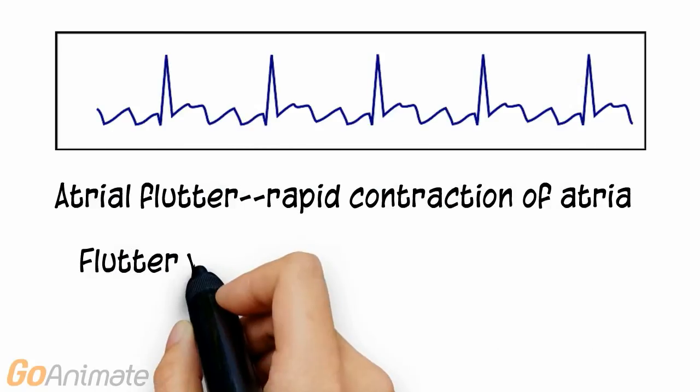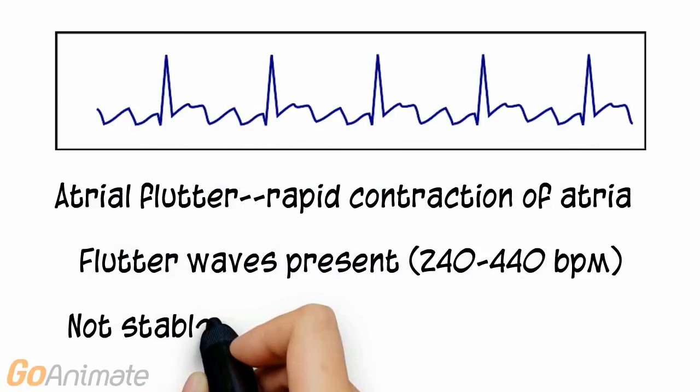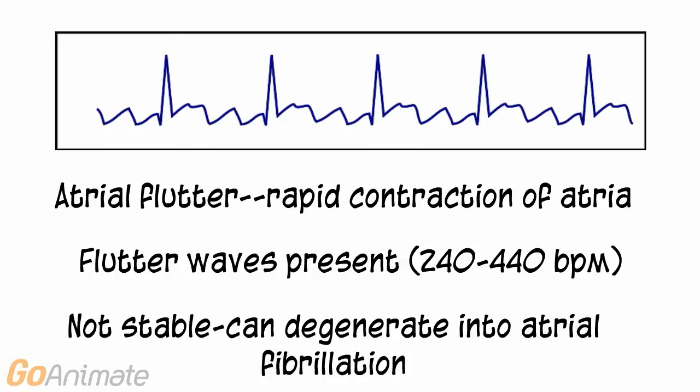Atrial flutter is a rapid contraction of the atria. Flutter waves are present at a rate of between 240 and 440 beats per minute. Atrial flutter is not stable and can degenerate into atrial fibrillation.